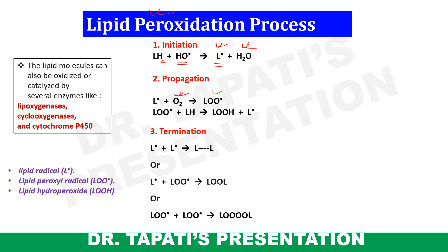The unstable lipid radical quickly reacts with oxygen in the propagation step to form a peroxyl radical. This peroxyl radical then reacts with another lipid to produce lipid hydroperoxide. The chain reaction of free radical reactions continues until a non-radical species is formed by combination of two free radicals in the termination step.